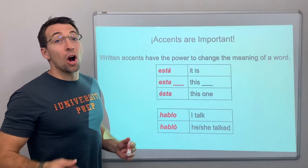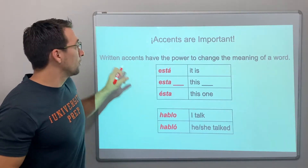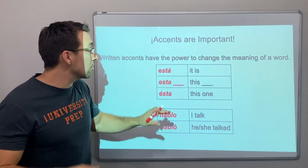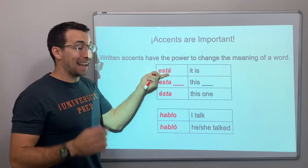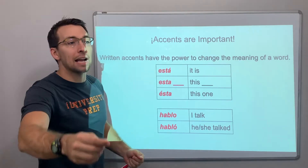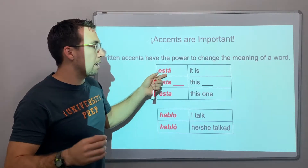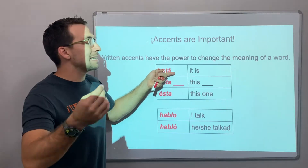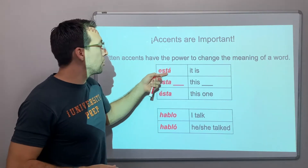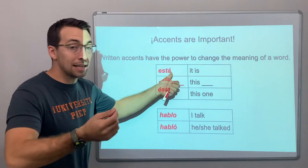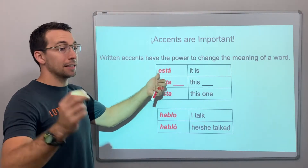Written accent marks are important. The written accent marks have the power to change the meaning of a word — this is crazy. Está: él está bien — he is well. El árbol está creciendo — the tree is growing. Está, with the accent on the A.